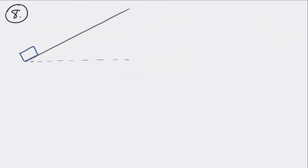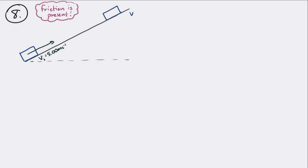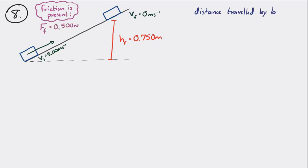There's friction between the block and the ramp. The block begins at the bottom of the ramp moving at 5 meters per second, and eventually reaches its highest point and stops. The height of the block is 0.750 meters above the bottom of the ramp. We want to determine two things: the distance traveled by the block, and the angle of incline of the ramp.